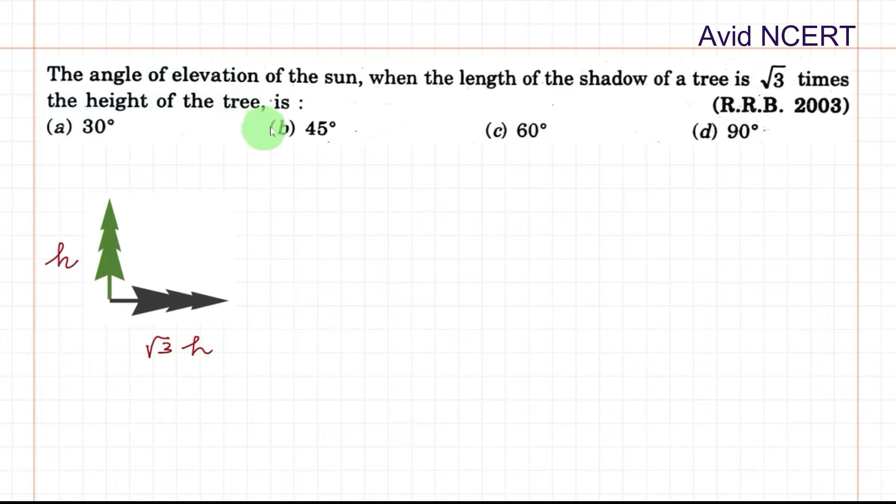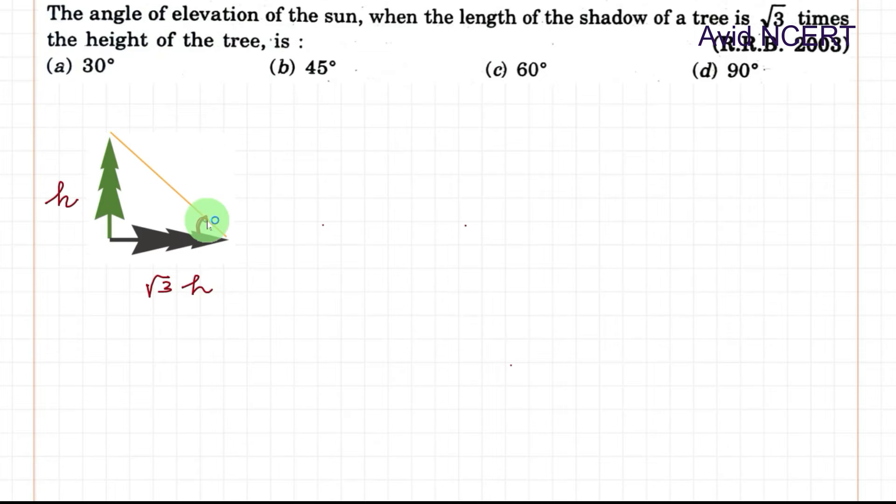So the angle of elevation is the question mark. This is the angle of elevation which has to be found. If it is θ, the side opposite to θ is the opposite side, the longer side is the hypotenuse, and the base is the adjacent.